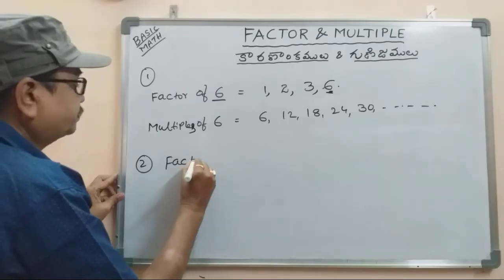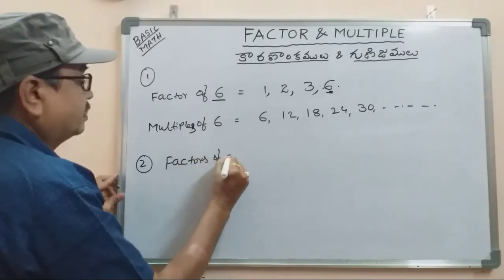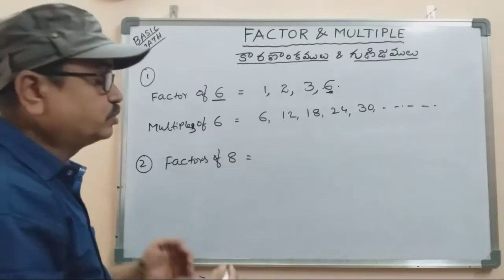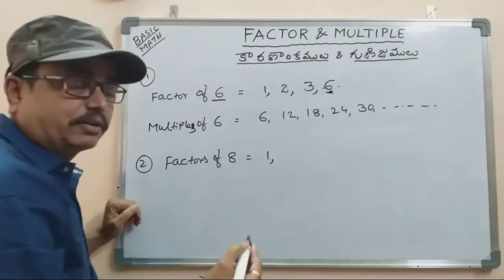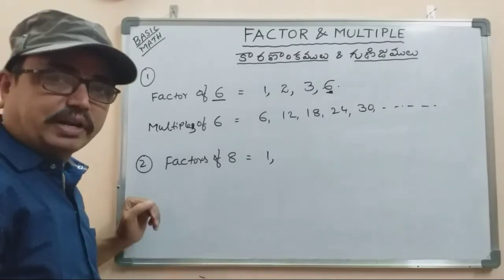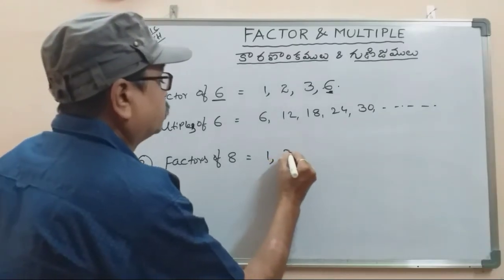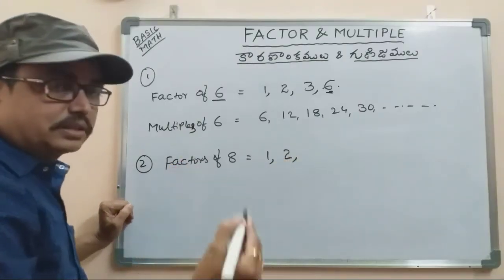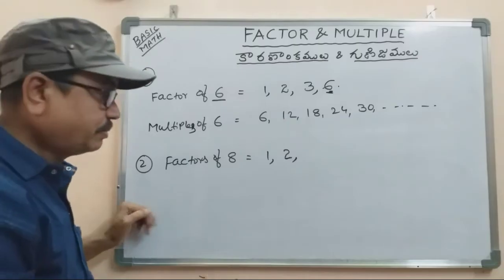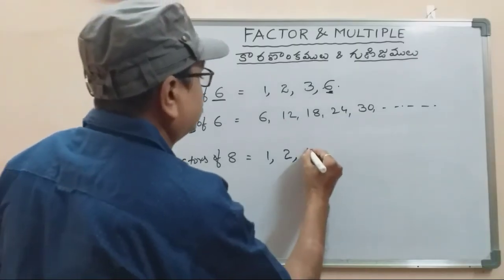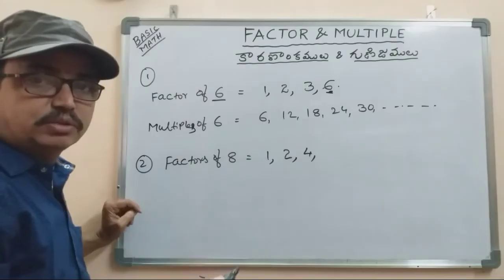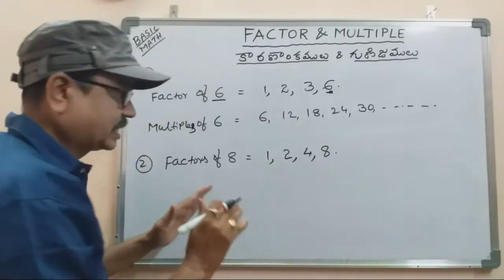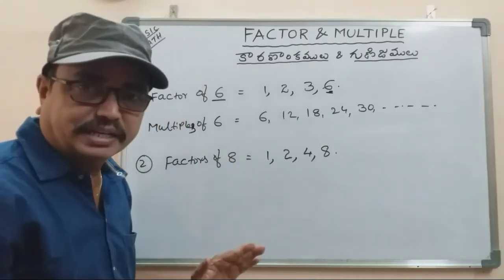Factors of 8: 1 times 8 is 8, 2 times 4 is 8, 4 times 2 is 8, 8 times 1 is 8. We check each table — 3 does not divide exactly, 5 does not, 6 does not, 7 does not. So the factors of 8 are 1, 2, 4, and 8.